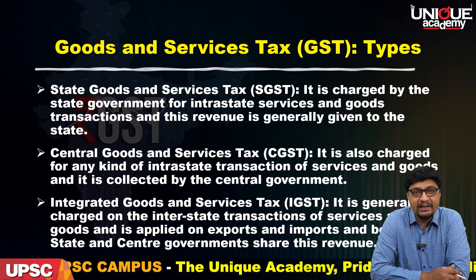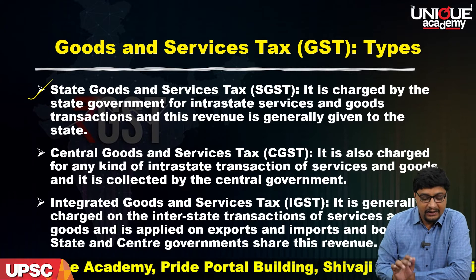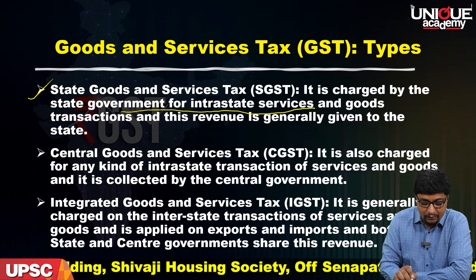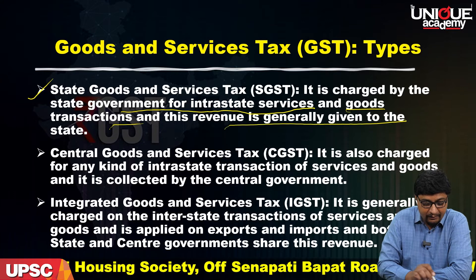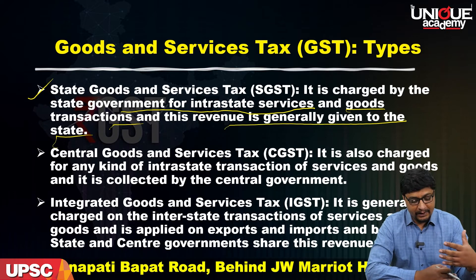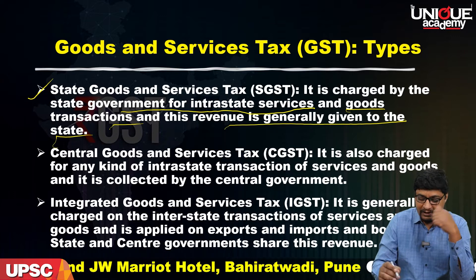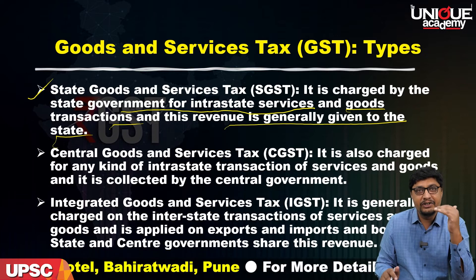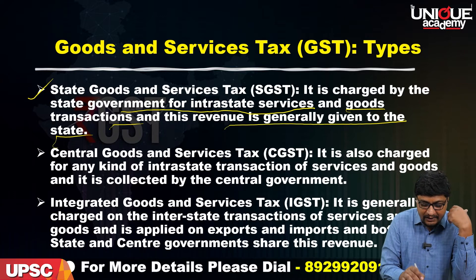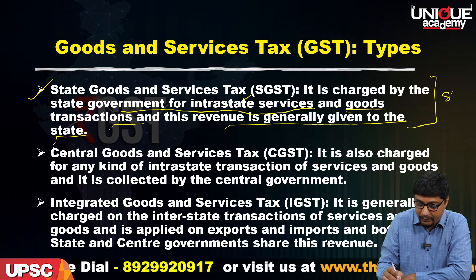The first type of GST is the State Goods and Services Tax (SGST). It is charged by the state government for intra-state services and goods transactions, and this revenue is generally given to the state. States need a certain kind of revenue, and SGST covers intra-state goods and services that are utilized, consumed, or manufactured within a state.